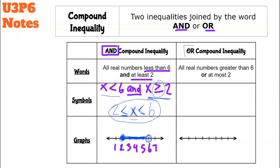Next, we have an OR compound inequality, which means there's the word 'or' in the middle. This means the value will fit one category or the other — it won't fit both. For example: all real numbers greater than 6 or at most 2, meaning x > 6 or x ≤ 2. 'At most' means 2 is the maximum.